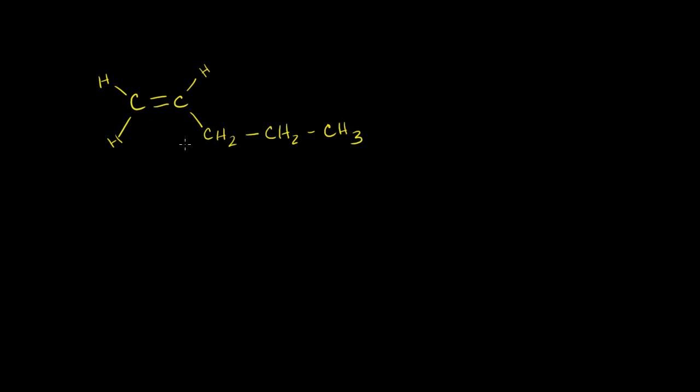If I've got some pent-1-ene, let's just make sure we name that correctly. We have 1, 2, 3, 4, 5 carbons. There's only one chain here, and our double bond is right on the number one carbon. We'll make this the number one carbon because it's the closest to the double bond. It's better to start counting from the left end than the right end. So this is pent-1-ene.